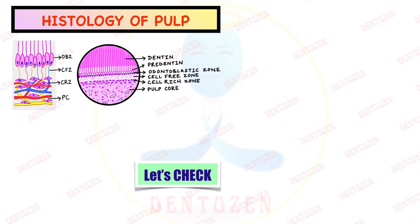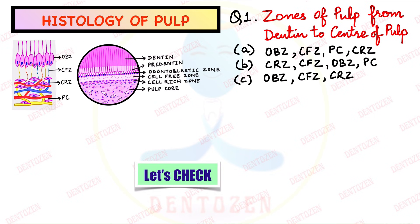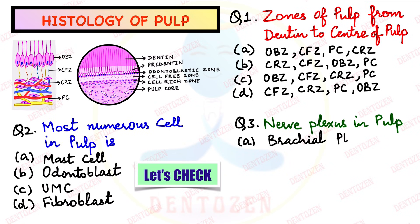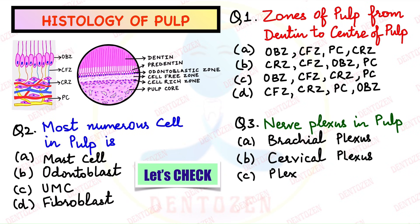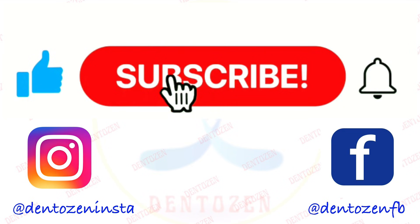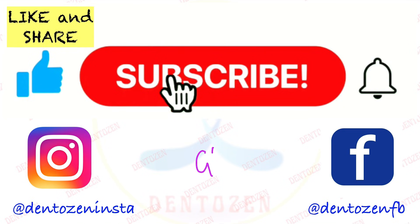Let me give you a few MCQ questions. Zones of pulp from dentine to the center — in that order, pick your choice. What are the most numerous cells of the pulp, and also the second most numerous cells of the pulp? What is the nerve plexus in the pulp known as? That is all for this video. If you enjoyed it, tap the like button and share with your friends. Keep watching, keep learning and keep smiling — good luck for your exam.